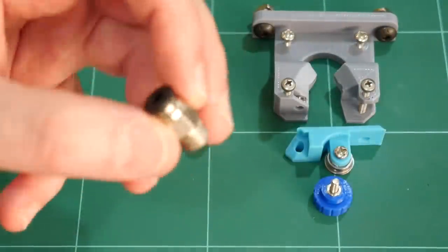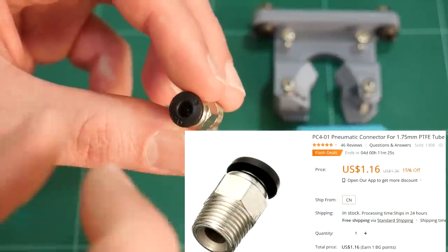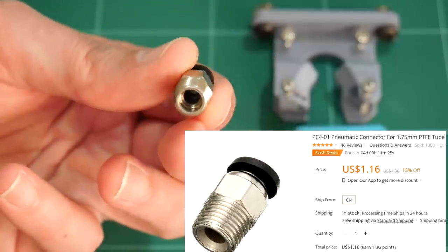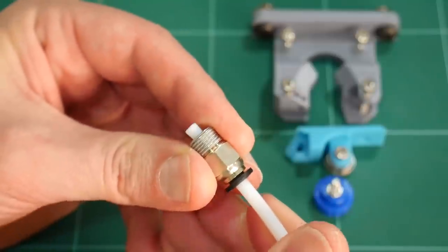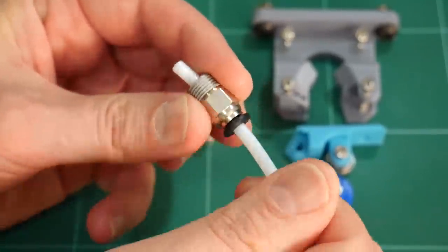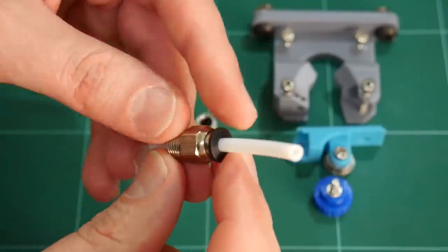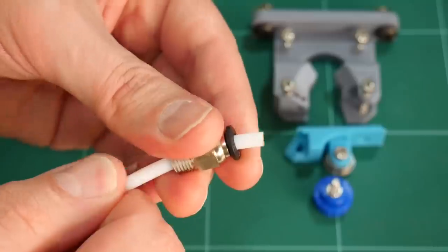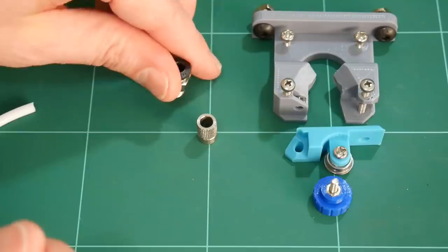we have a M10 push fit connector. This particular connector allows the 4 millimetre outer diameter Teflon tube to pass right through, just to give you a demonstration. It's a one-way push fit connector, so you can push through in this direction. But it's locked, you cannot pull it back in the other direction unless you push down this plastic ring along the top. So, you need at least one of those, or you can get two of them to install one on either side.